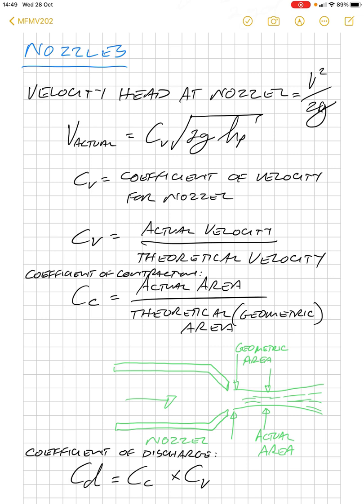Then, we have a coefficient of contraction, Cc, which is a function of the actual area divided by the theoretical or geometric area. And, in the illustration below, we can see that, as the fluid exits the nozzle, we have the nozzle diameter, which is a geometric area.